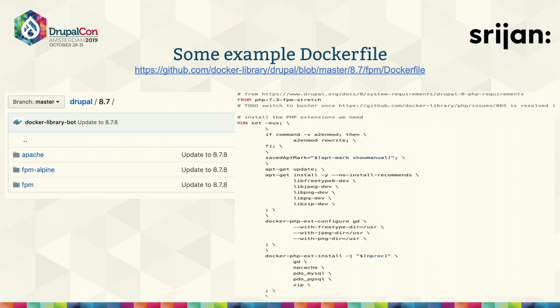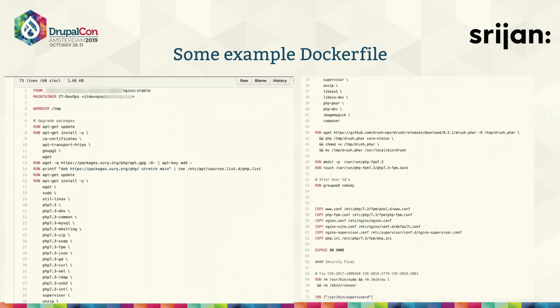These are some examples of Docker files. From Docker Hub, there are Drupal images — Apache, PHP, Alpine, and FPM variants. For example, the first line might be 'FROM php:7.3-fpm-stretch,' pulling directly from Docker Hub. Docker also gives you the option to pull from Docker Hub or push to your own private registry. You can configure what libraries and dependencies you need, and I can install things like Drush and Composer, and configure how I want the application to run in any environment.